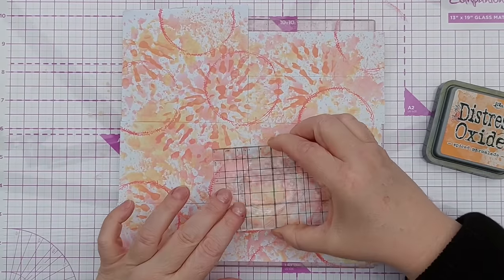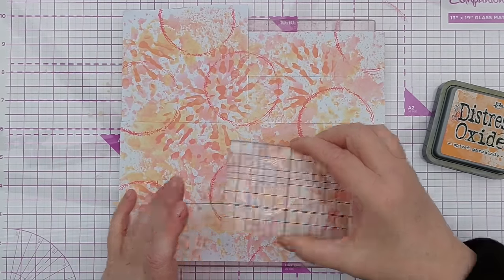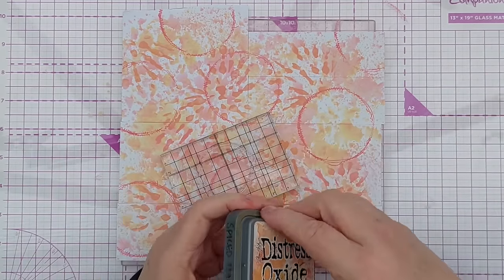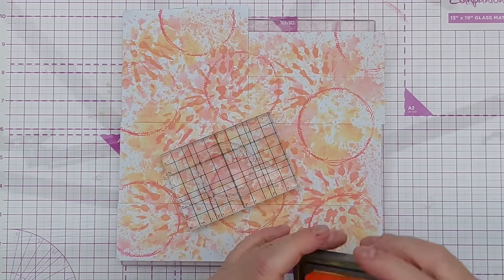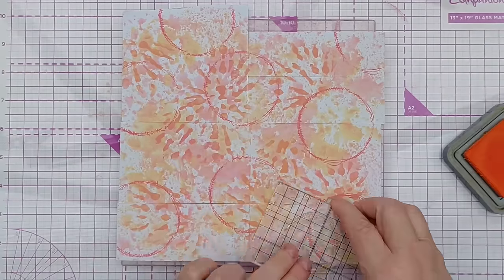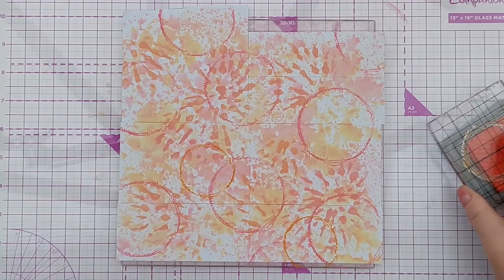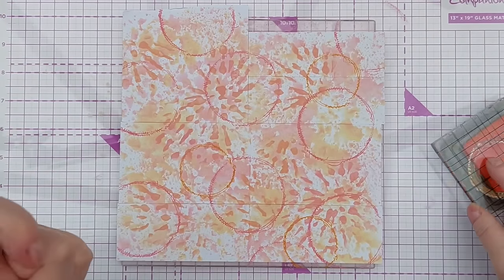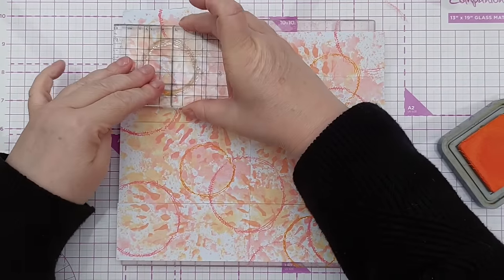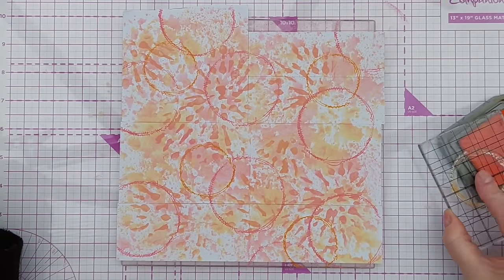And I've got a smaller stitched circle and I'm going to use spiced marmalade on this one. So I'm using slightly stronger colors for the stamping so it stands out against the colors that I smushed with and stenciled with.